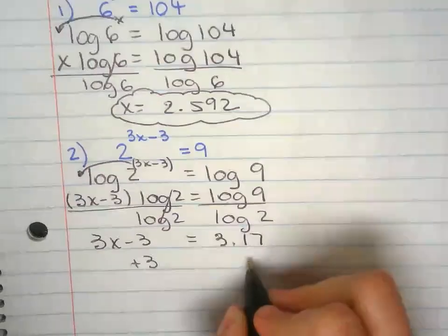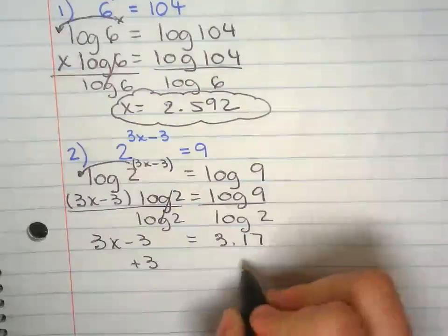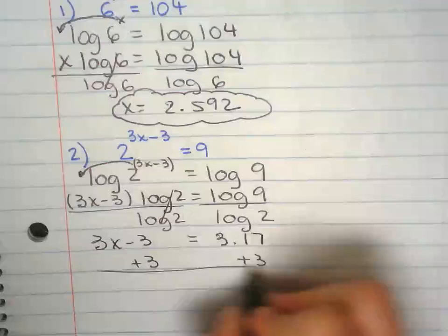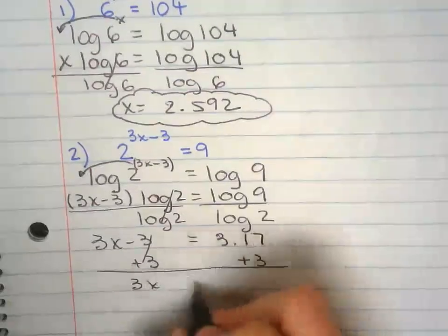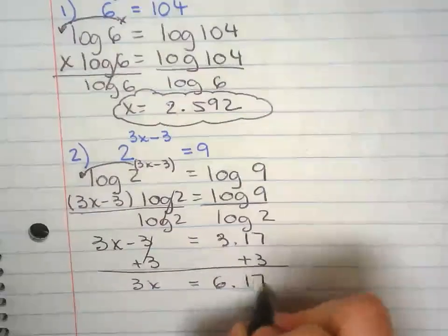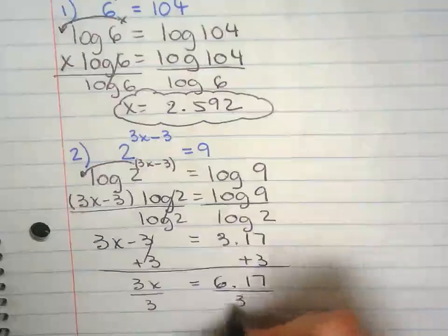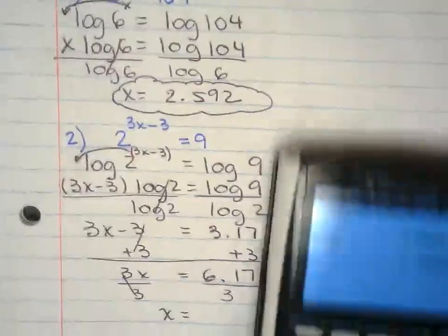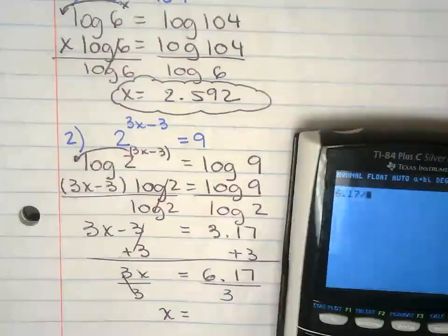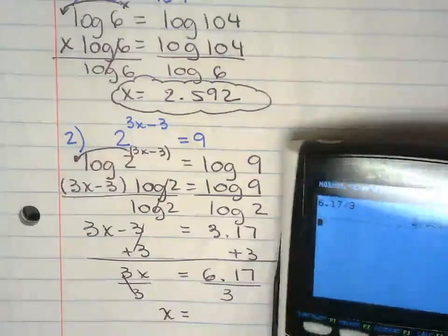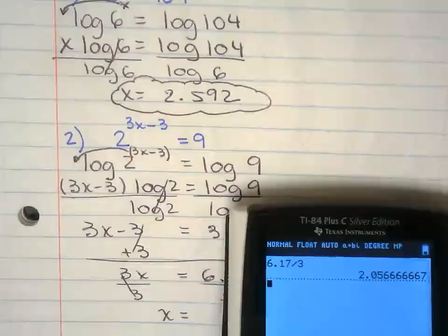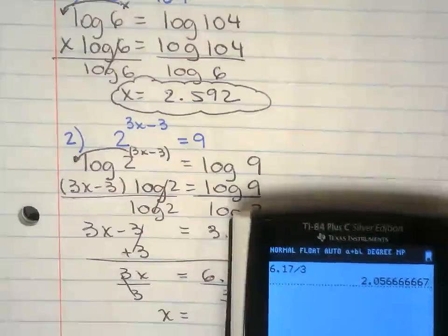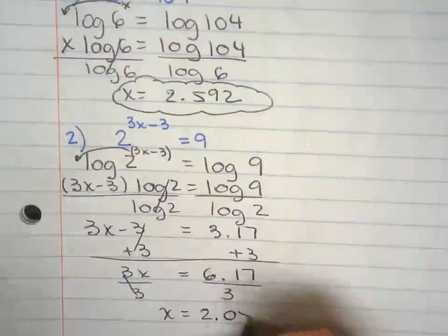Plus 3 to both sides. Divide by 3. And then we're going to divide by 3, 2.57.